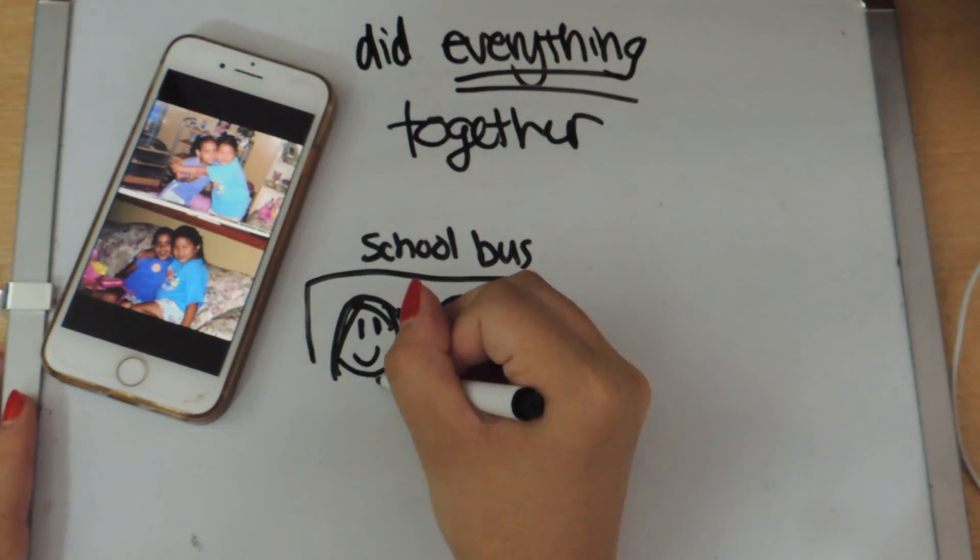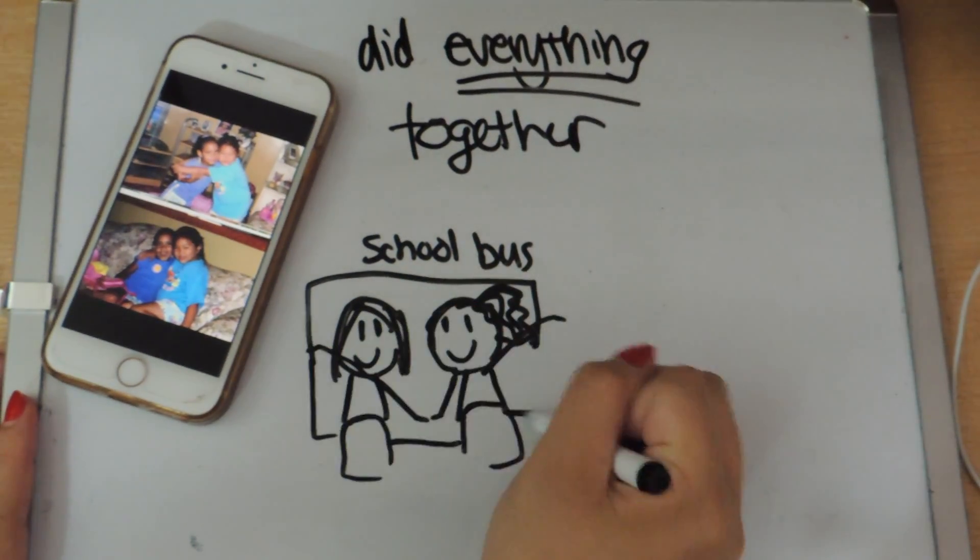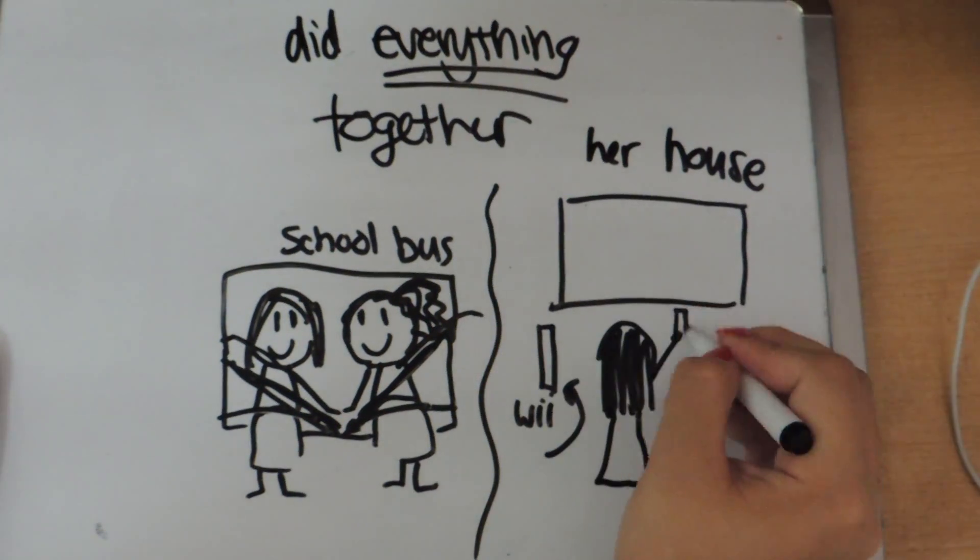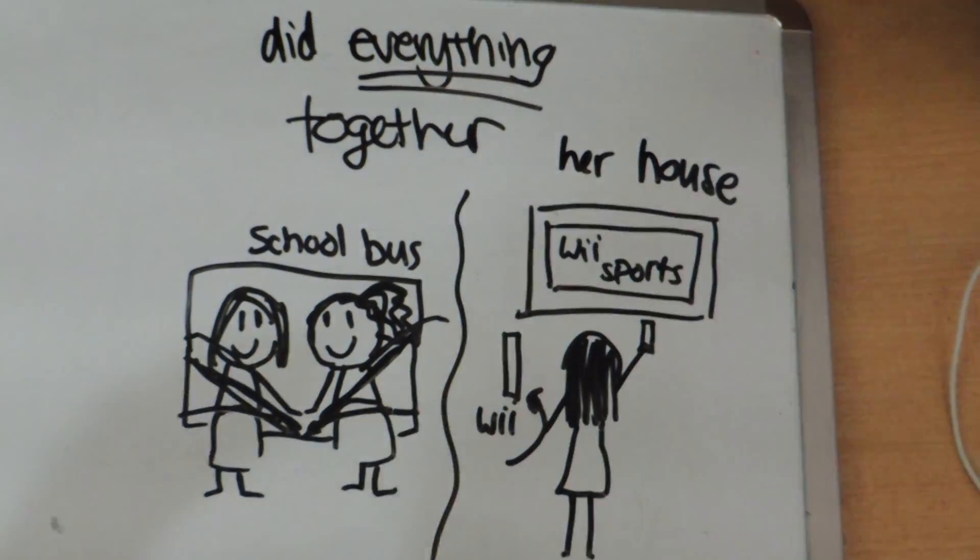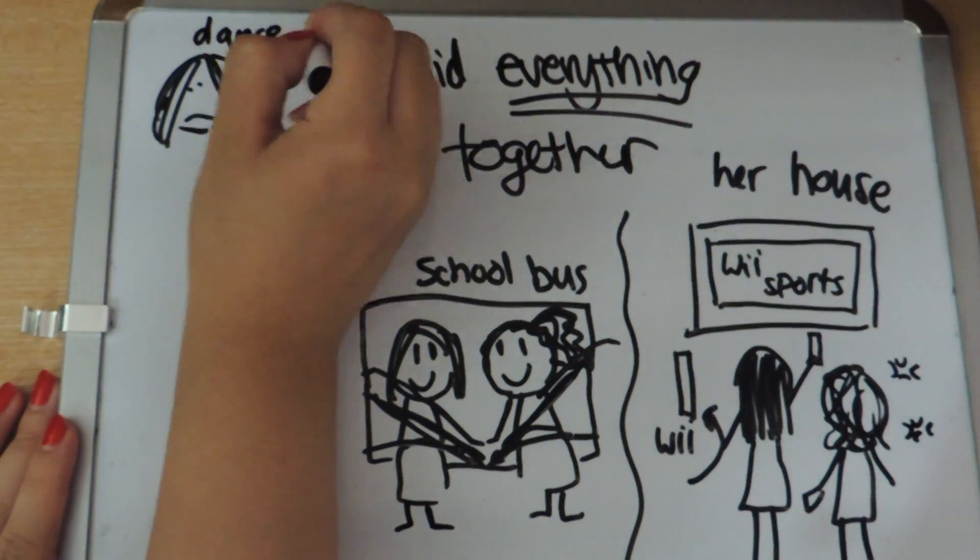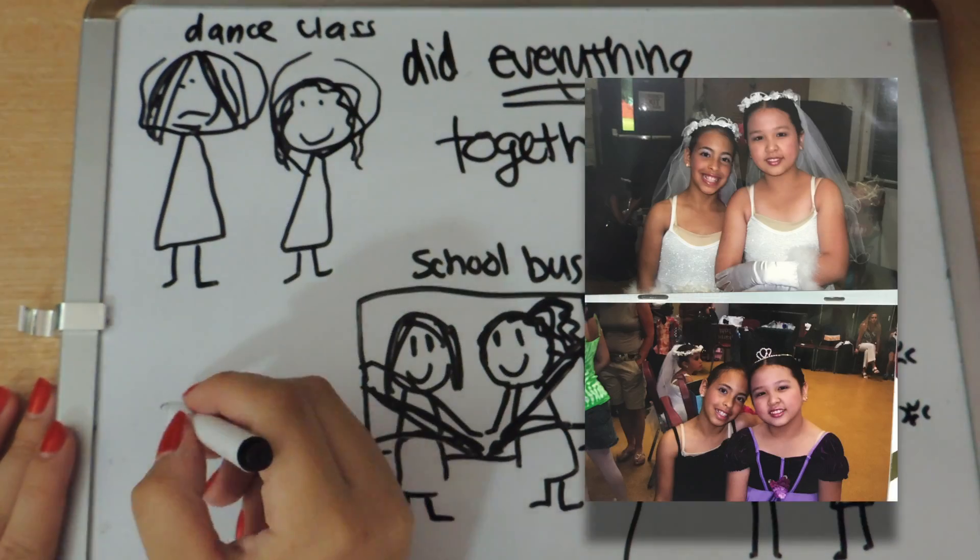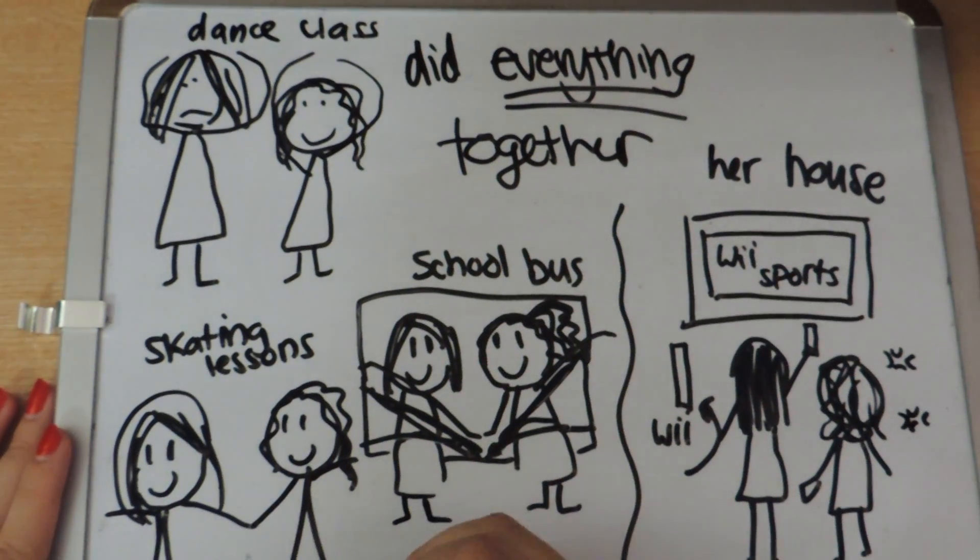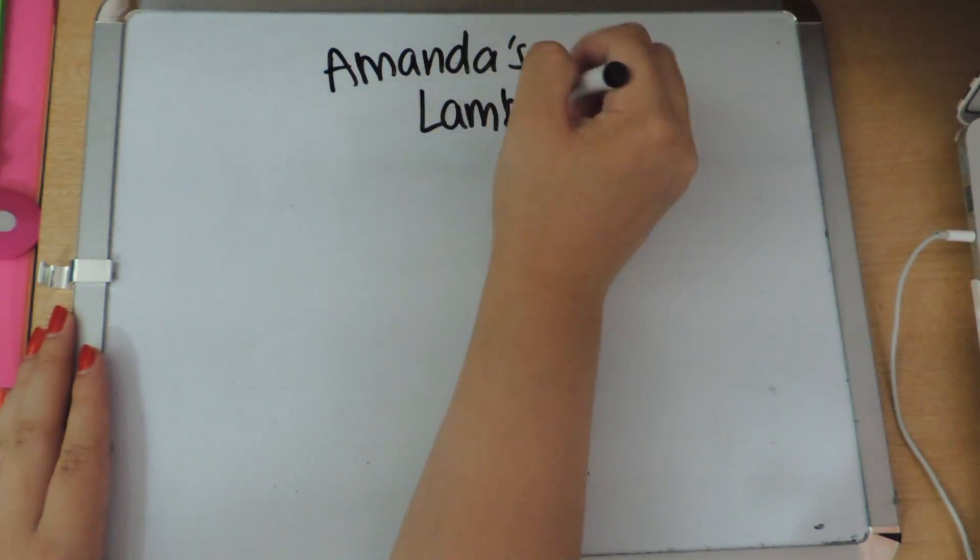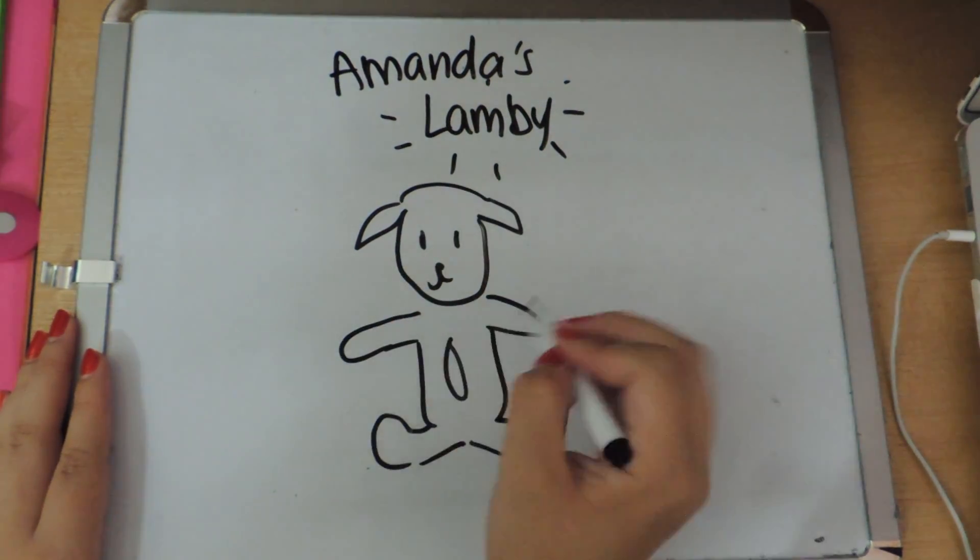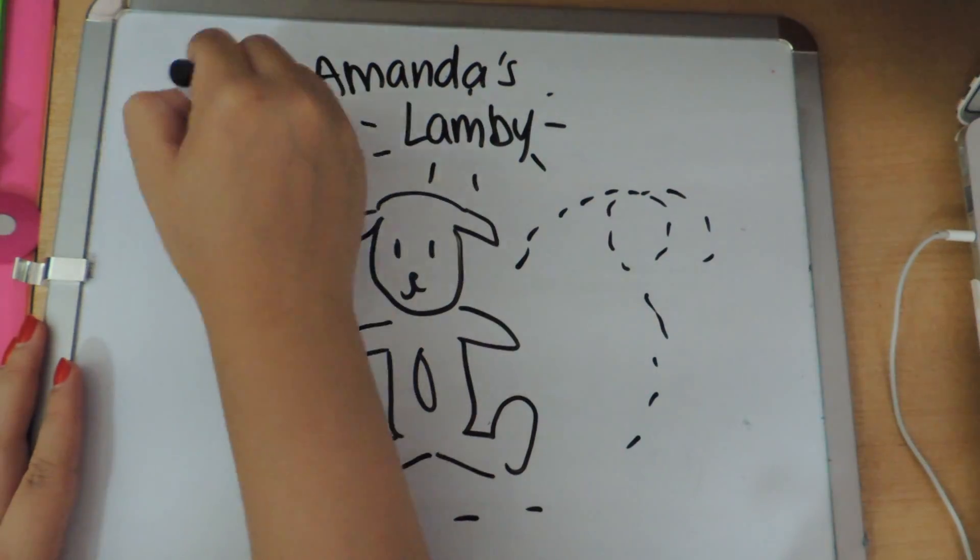Amanda and I did almost everything together. We grew up together from summer camp to being together on field trips, spending snow days at her house playing Wii sports and realizing how horrible I am at sports. From me taking dance classes with her to taking skating lessons with each other that was really fun. Another thing we shared was our love for cute little lambs.